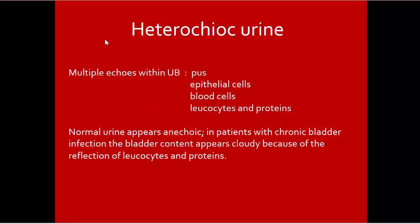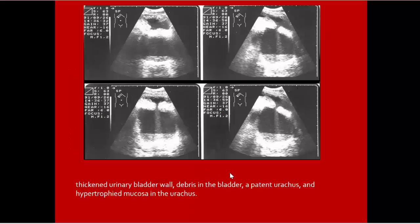What is meant by heterechoic urine? Urine appears on ultrasound with multiple echoes within the urinary bladder. These multiple echoes may be present in bacterial cystitis due to epithelial cells, blood cells, leukocytes, and proteins. In a patient with chronic bladder infection, the bladder content appears cloudy because of reflection of leukocytes and proteins. Examples include heterechoic urine, debris in the bladder, and hypertrophied mucosa.